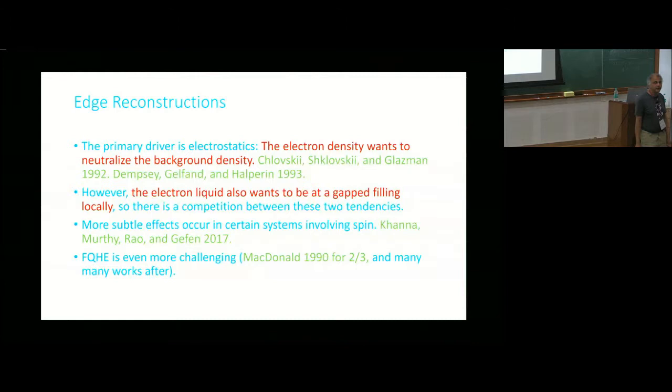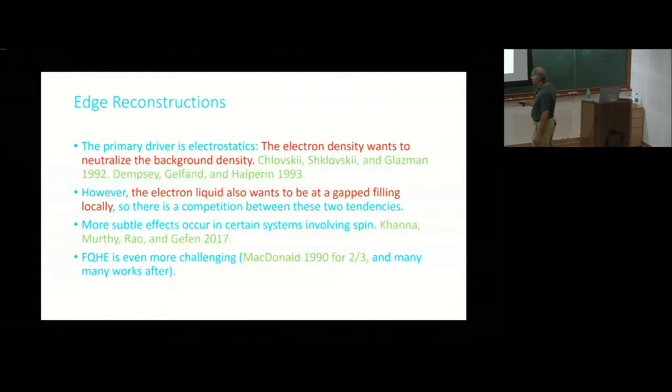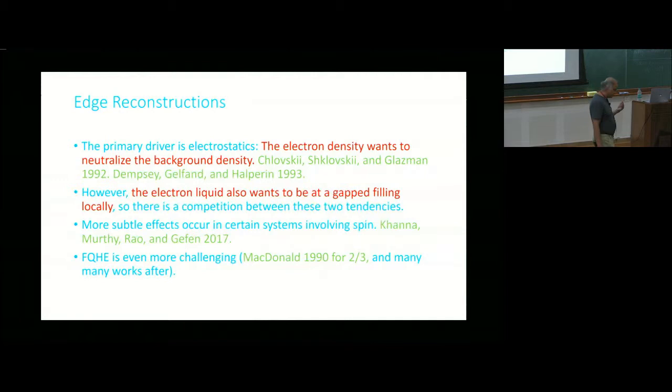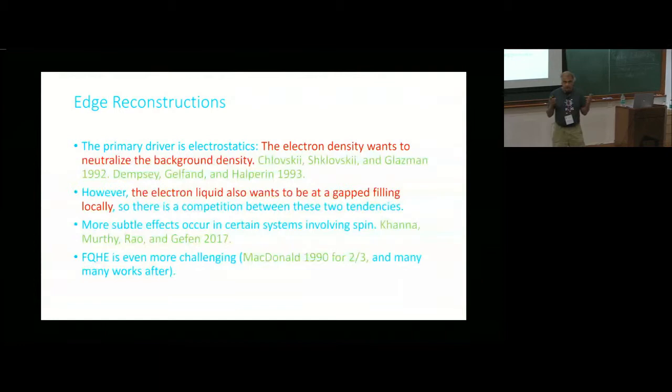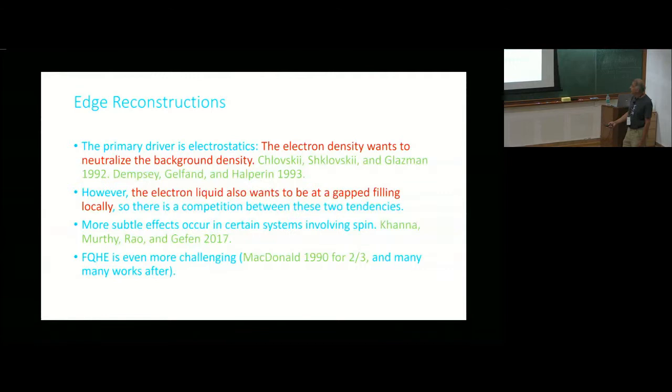There are other things that can happen as well. There are certain kinds of edge reconstruction transitions that happen because of spin exchange — not primarily because of electrostatics, but primarily because of spin exchange. And once you get to the FQHE, things become really wild, especially the case of two-thirds. This case has still not been solved in the sense that there's no really good explanation of experiments yet.